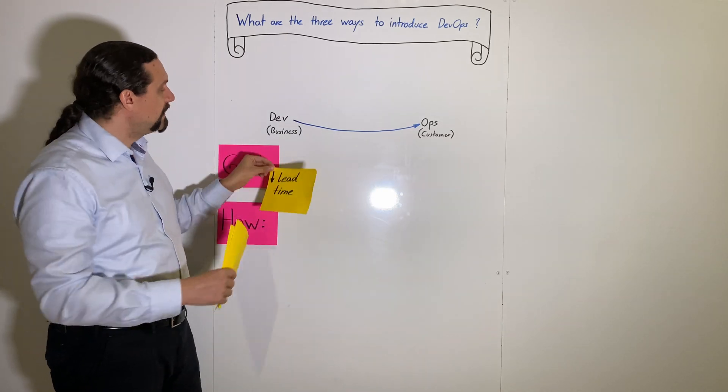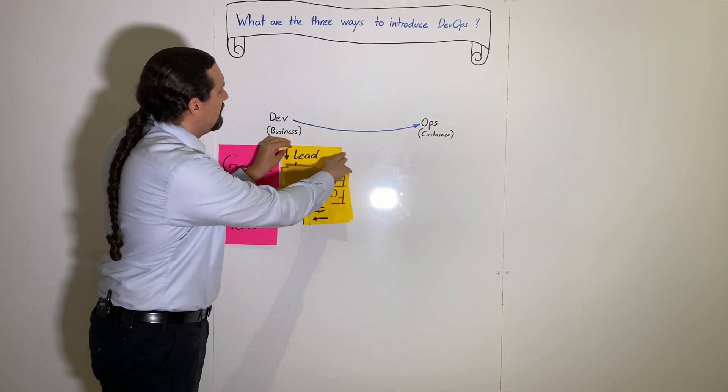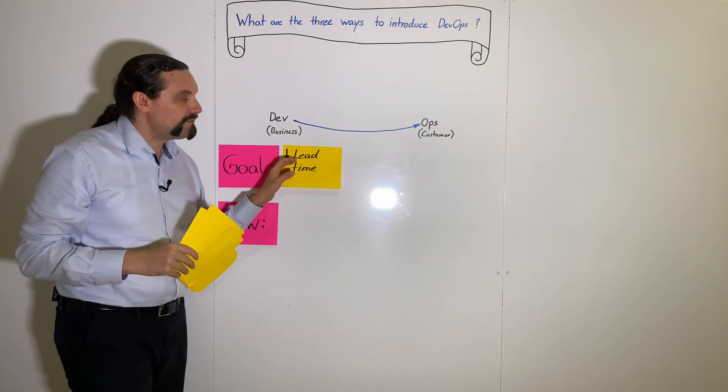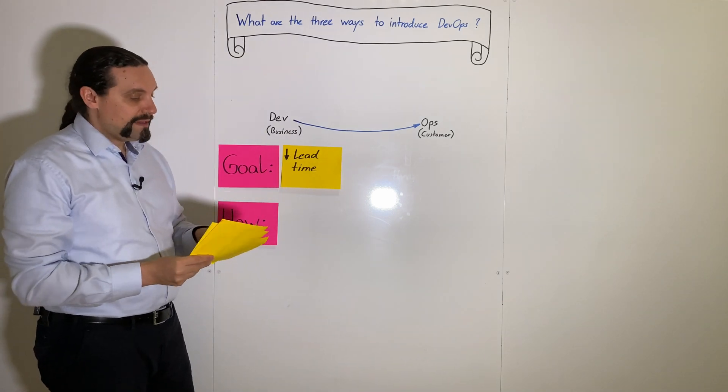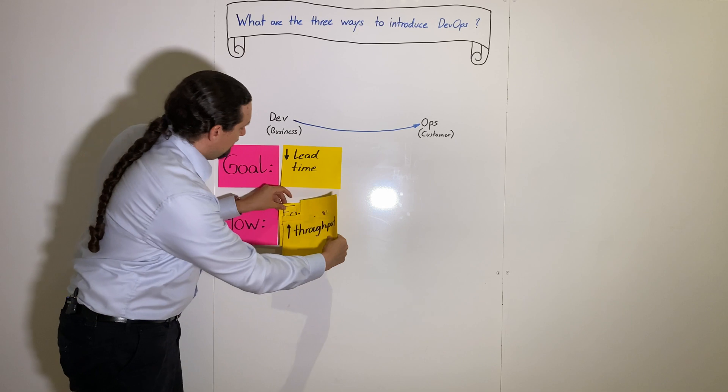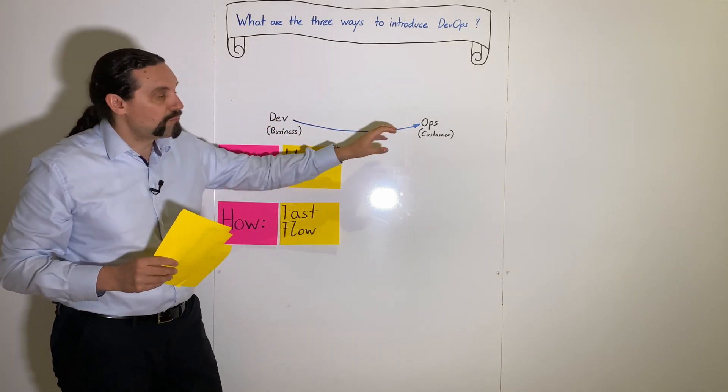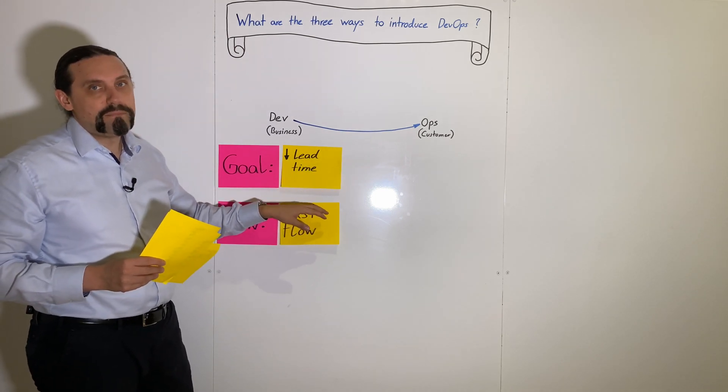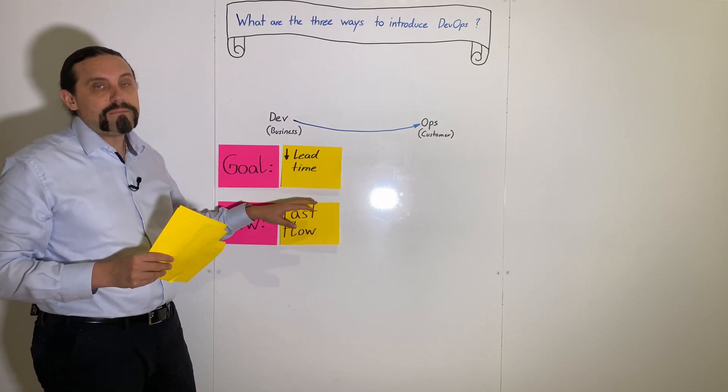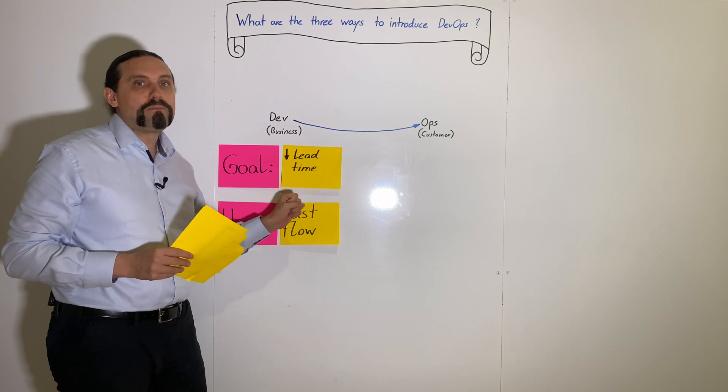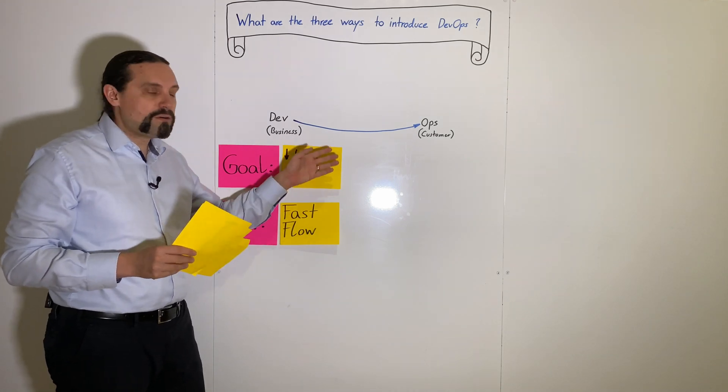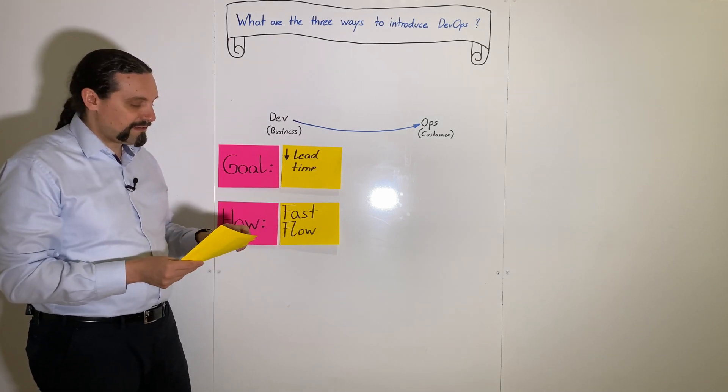The goal is we want to heavily reduce the lead time so that we can get a fast flow of value into production. We do that by automating stuff, by implementing a proper continuous integration or continuous deployment pipeline.